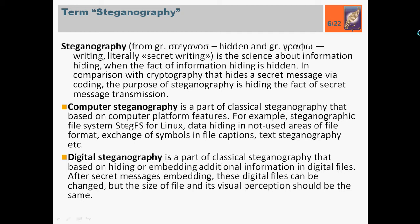But let's have a closer look at computer and digital steganography. Computer steganography is a part of classical steganography that is based on computer platform features. For example, steganographic file systems, Steg.fs for Linux, data hiding in non-used areas of file format, exchange of symbols in file captions, text steganography, etc. Digital steganography is a part of classical steganography that is based on hiding or embedding additional information in digital files. After secret message embedding, these digital files can be changed, but the size of the file and its visual perception should be the same.